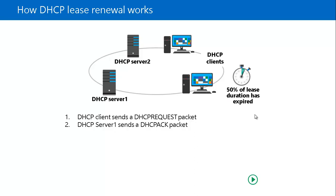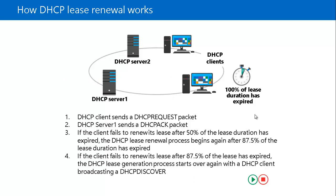If the DHCP client cannot contact the DHCP server, the client waits until 87.5% of the lease time has expired, at which point it sends a DHCP Request broadcast to all DHCP servers — not just the one that provided the original lease. However, this broadcast is for renewal of the existing IP address, not for a new lease. If the client still fails to renew the lease after 87.5% of the lease has expired, the entire DHCP lease generation process — the DORA process — starts over again.